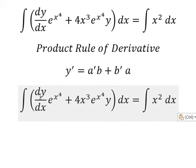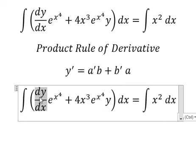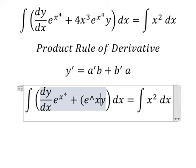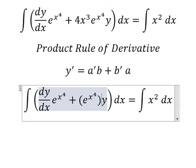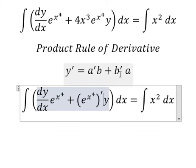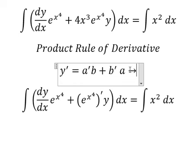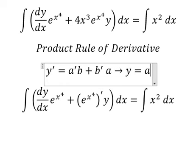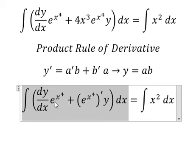The integration of this one we have first derivative of a multiplied by b, this one that is first derivative of b multiplied by a. So the integration of this one we have y equals ab.